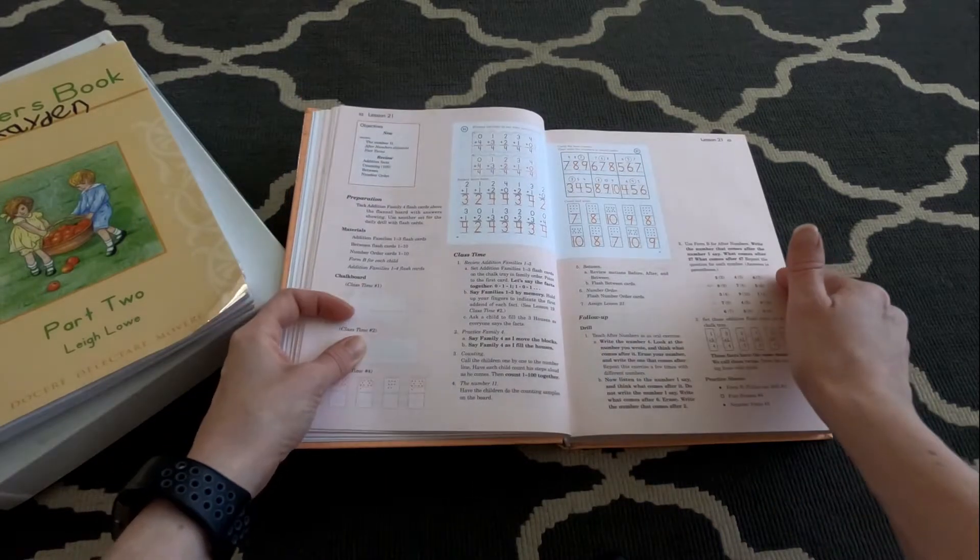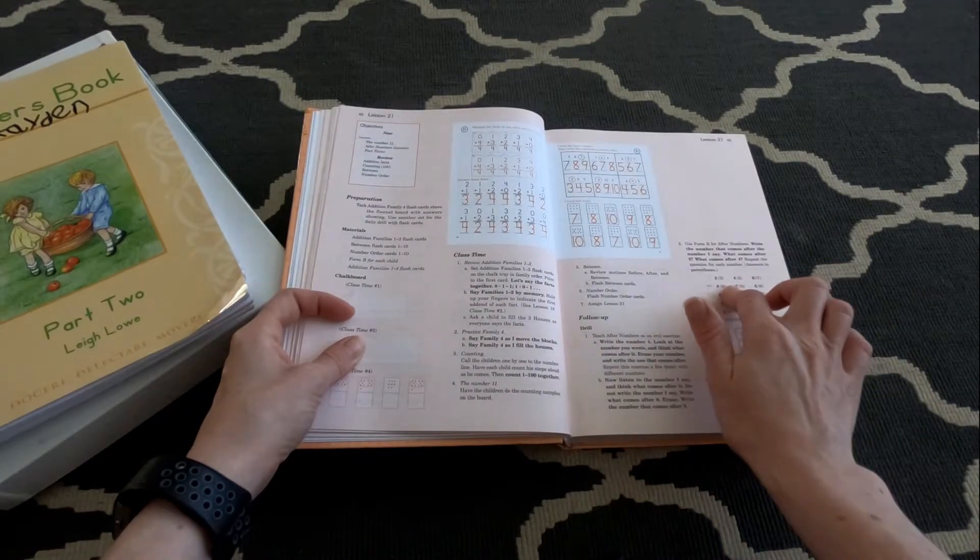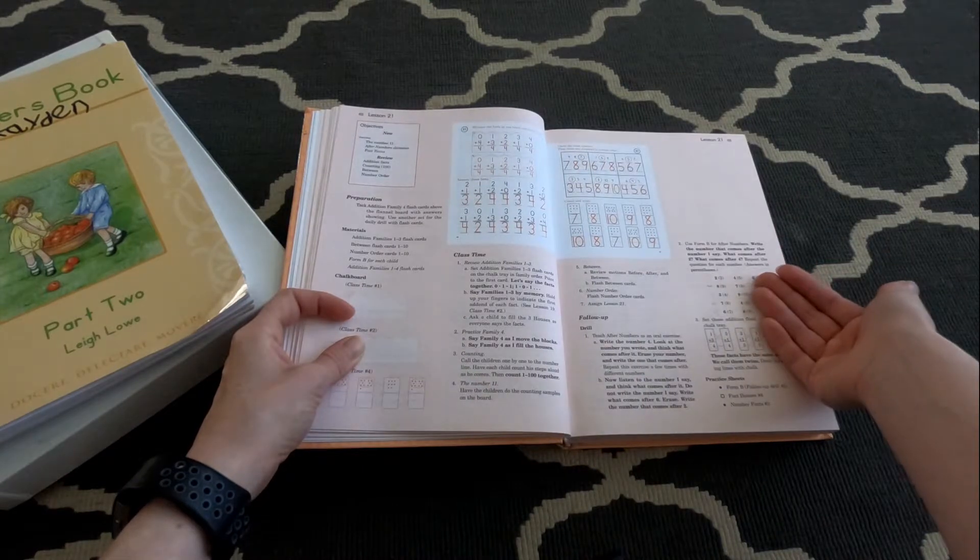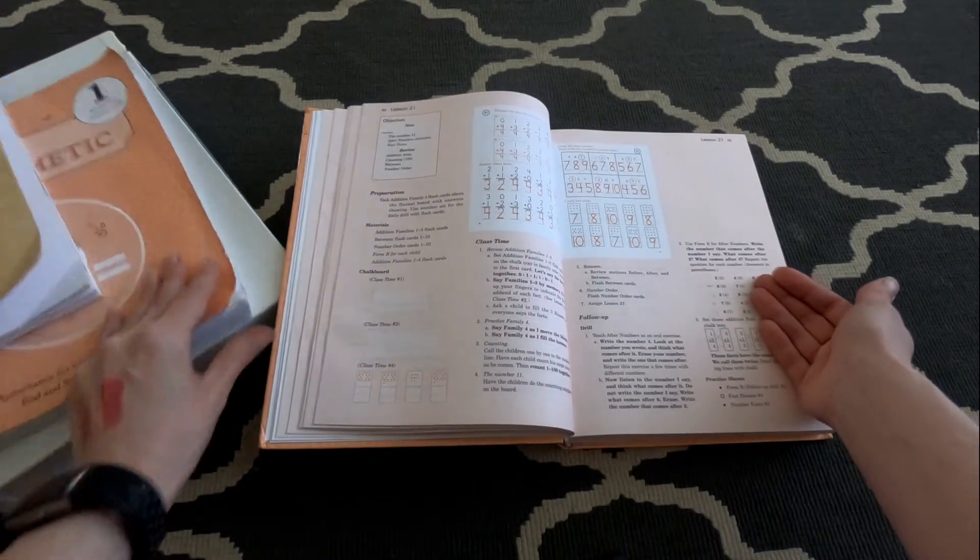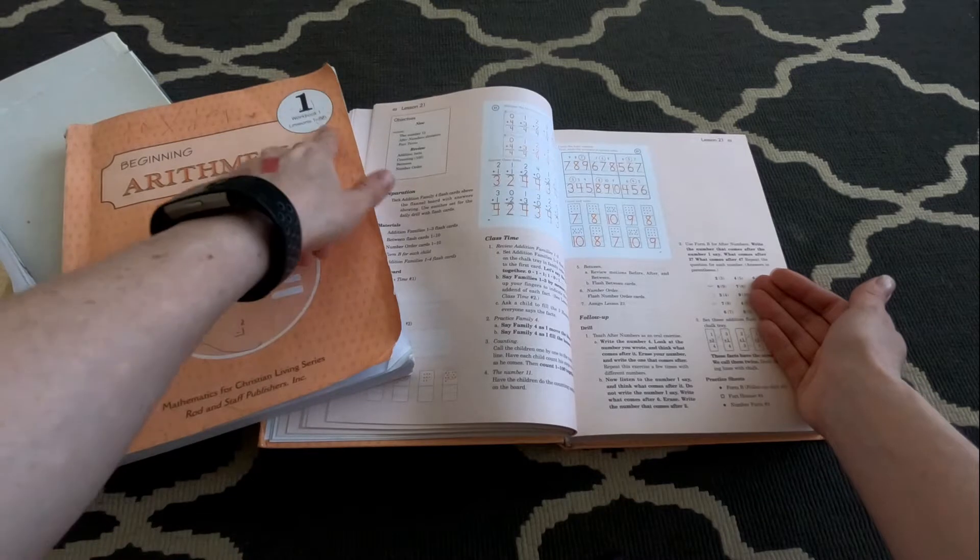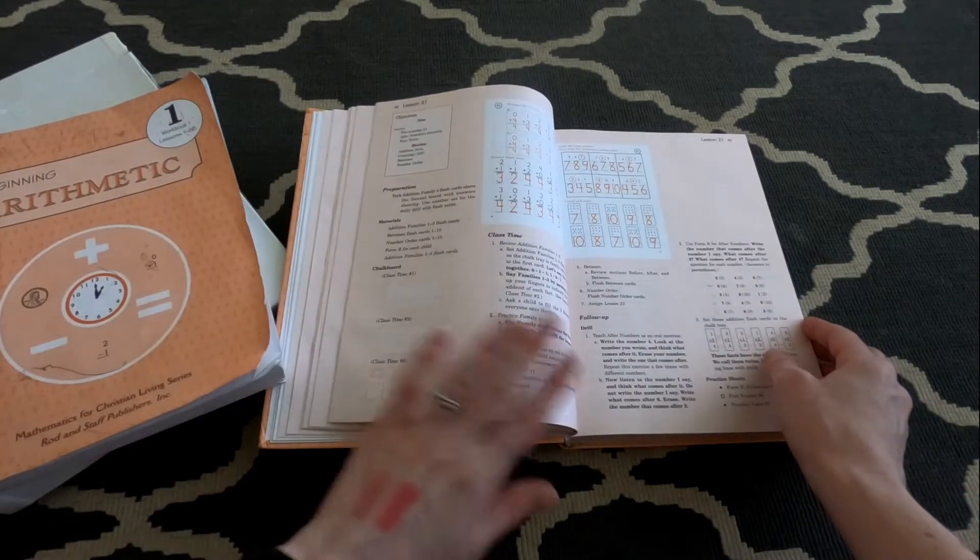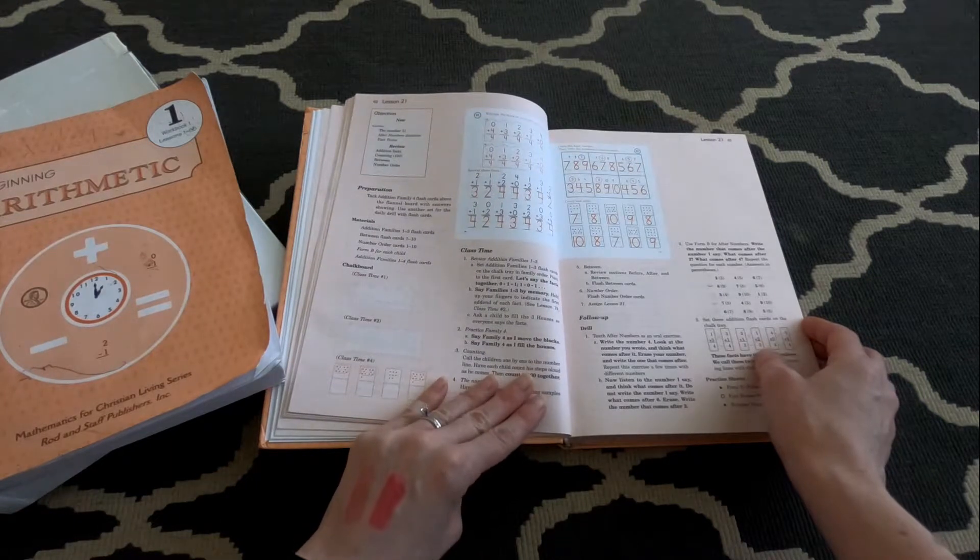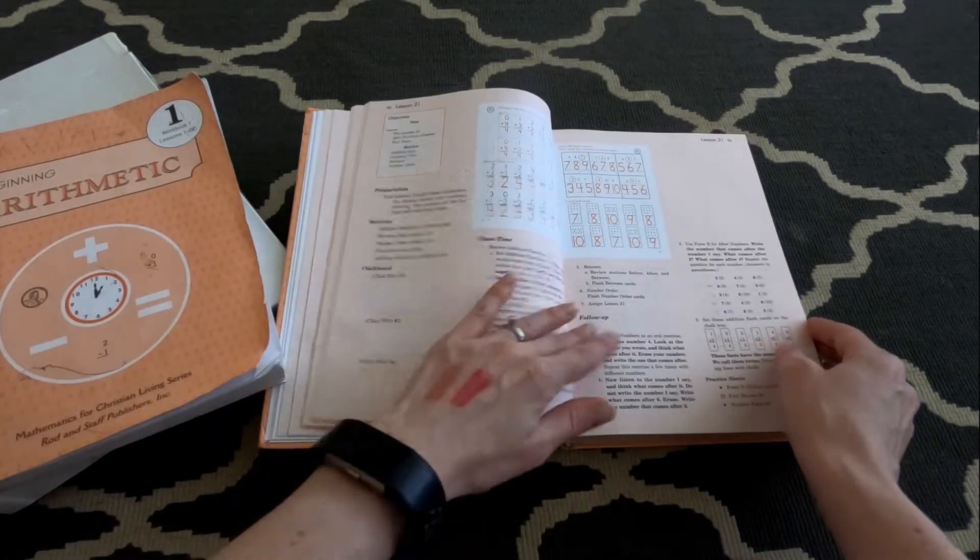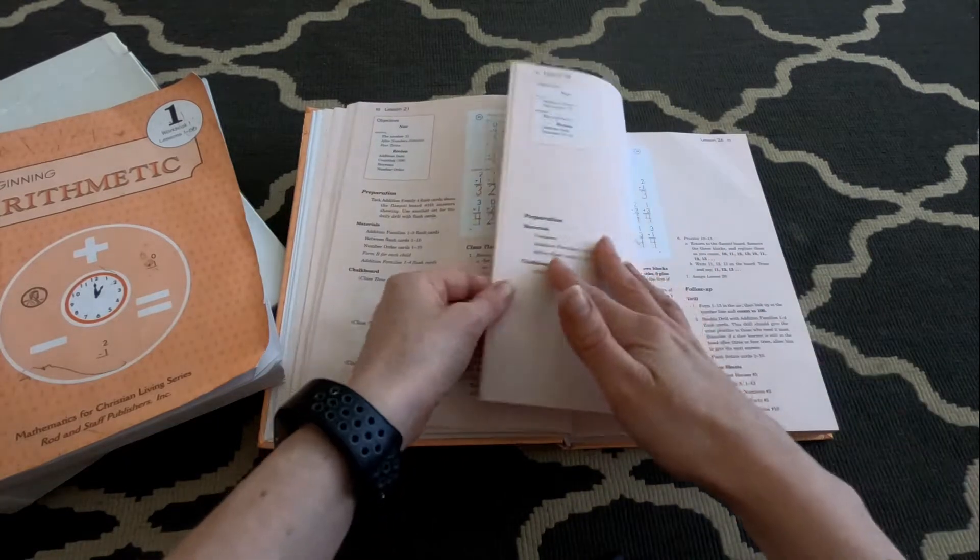And I'm only going to show you up through lesson 85. I did teach this one year for first grade where you go through the whole, both of these workbooks. I think it's 160 lessons, maybe 170, something like that. But for today I'm only going to show you through 85 because that's what I'm teaching for kindergarten.